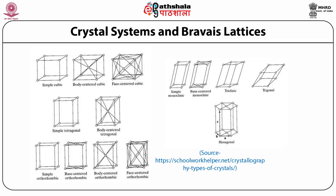The primitive, represented by P, has lattice points on the cell corners only — sometimes called simple. The base-centered, A, B, or C, has lattice points on the cell corners with one additional point at the center of each face of one pair of parallel faces. The body-centered has lattice points on the cell corners with one additional point at the center of the cell. The face-centered has lattice points on the cell corners with one additional point at the center of each face. Not all combinations of crystal families and centering types are needed, as several are equivalent to each other. In this sense, there are 14 possible Bravais lattices in three-dimensional space, as shown in this slide.